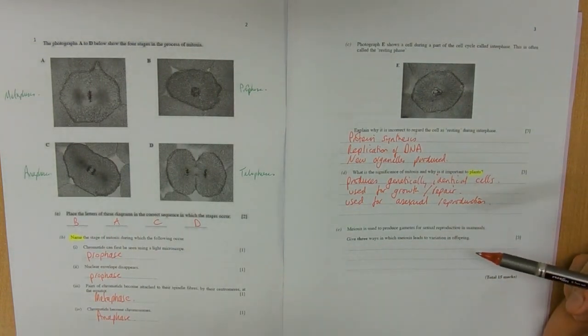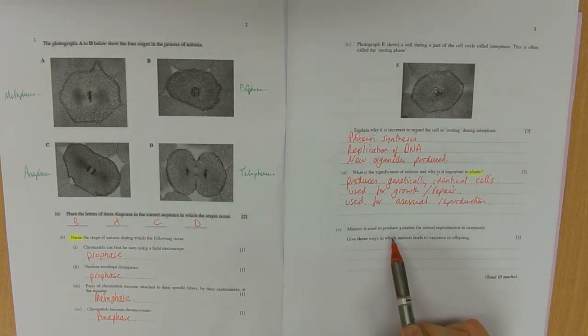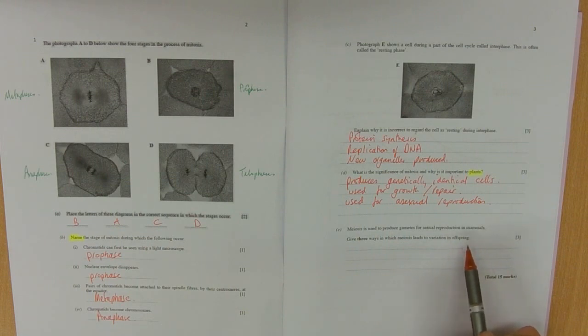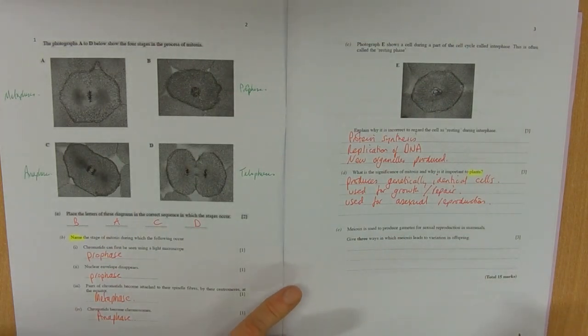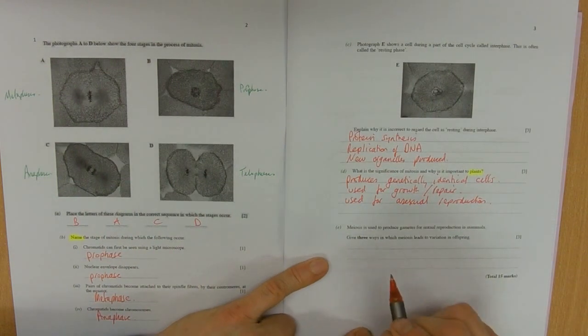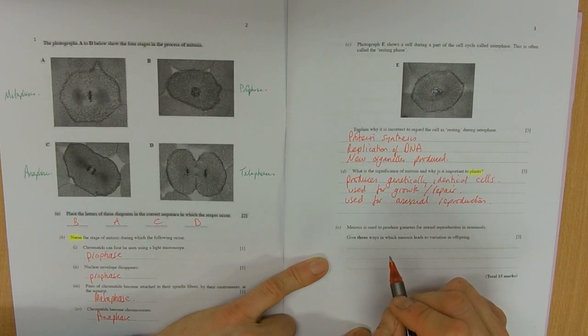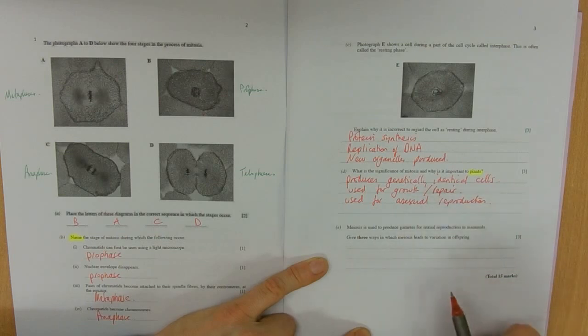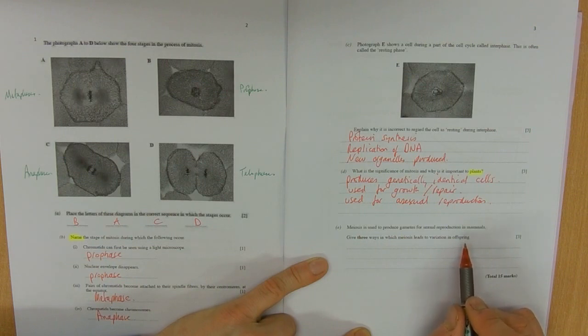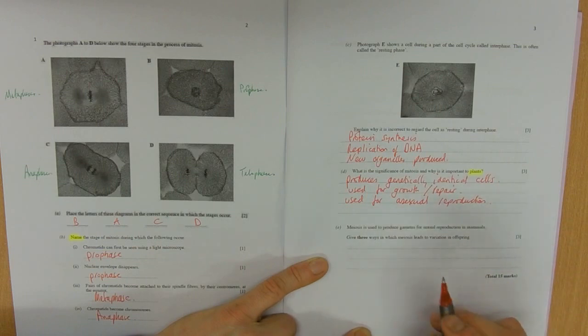Part E: Meiosis is used to produce gametes, so a different process now, for sexual reproduction in mammals. Give three ways meiosis leads to variation. So again, absolutely straightforward variation. We get segregation of the alleles, the separation of the alleles. These will get independently assorted. We'll get crossing over, and we might have mutations on the chromosomes as well.